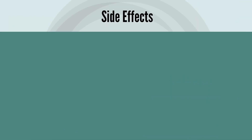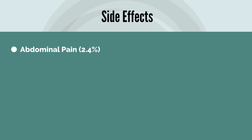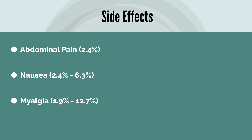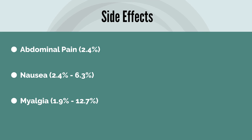With respect to side effects, Rosuvastatin is generally well tolerated, at least compared to some other statins. However, abdominal pain, occurring in about 2.4%, nausea, and myalgia — which is muscle pain — occurs in between 1.9 and 12.7% of the population. Myalgia is one of the most characteristic side effects of all statins, and it tends to be the number one reason why a lot of people are not able to tolerate statins.